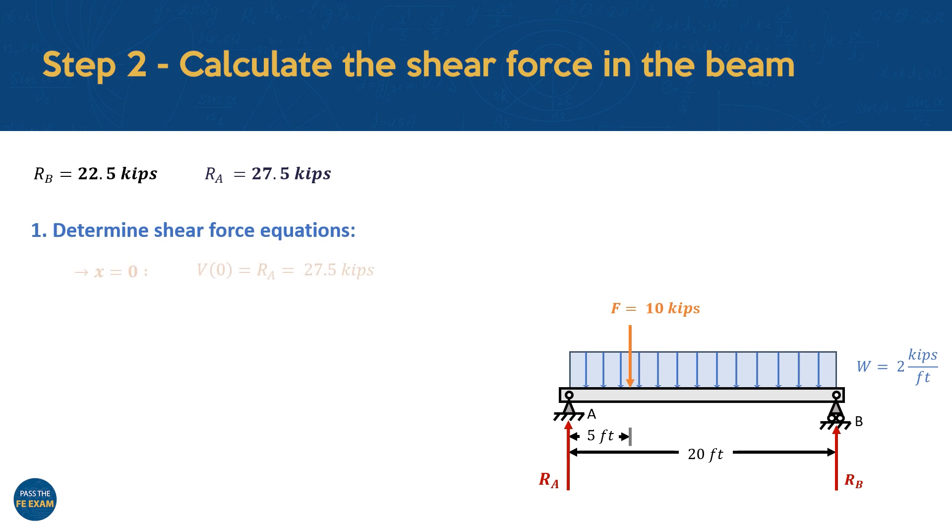We start with the first section of the beam between A and the point load at 5 feet. At point A, the shear force starts with the reaction force from the support, which we've already found as 27.5 kips. Then, as we move to the right from support A, the uniformly distributed load steadily reduces the shear force. Mathematically, the shear force equation for this section of the beam can then be described as RA negative W x. We can use this shear formula to calculate the shear force at the end of this section, but remember, when we substitute 5 feet here, the formula is giving us the shear force at the point just before this location, and not exactly at it. Doing this, we find that over the first 5 feet, the uniform loading has reduced the shear force by 10 kips, giving us a shear of 17.5 kips in the beam just before that point load is applied.